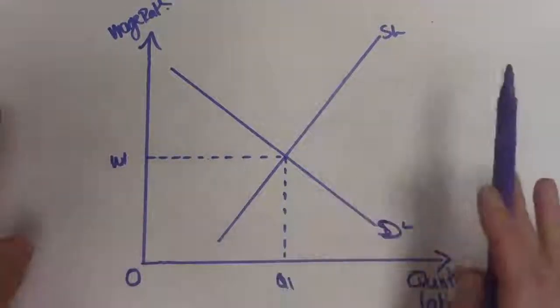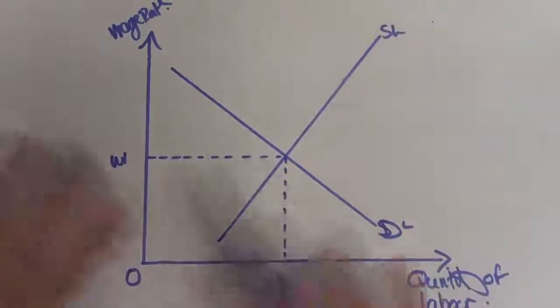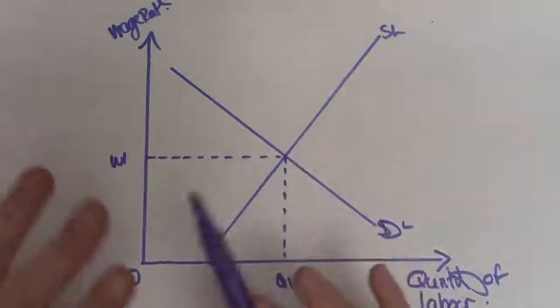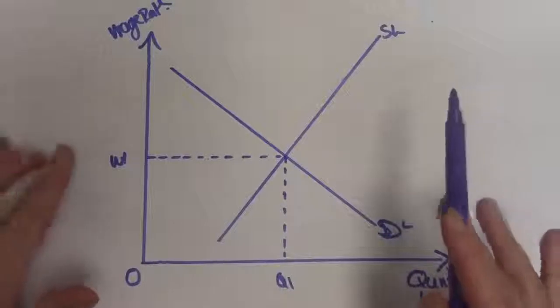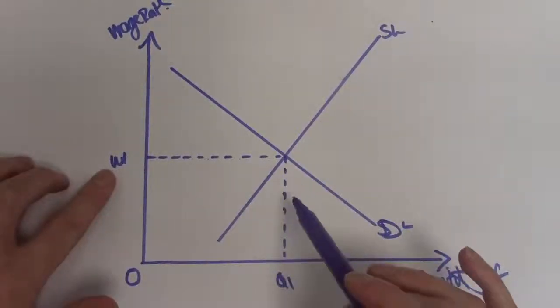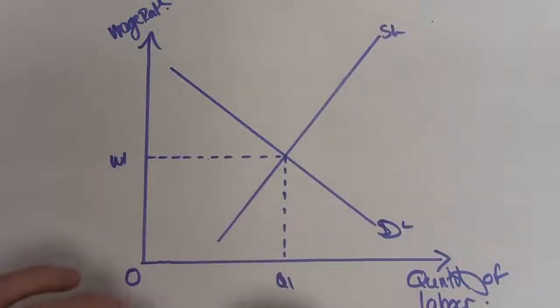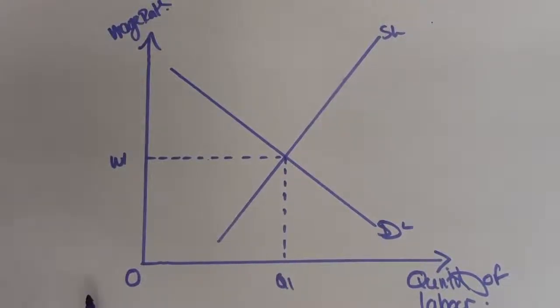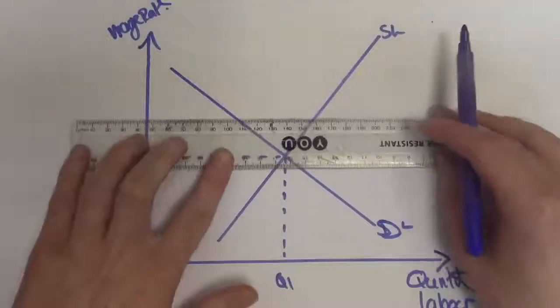In a market without any intervention from the trade union, we haven't even mentioned the trade union yet. The trade union hasn't done anything to increase this wage. This is the equilibrium wage rate determined by the market forces. Now, individual employees may not be happy with this wage rate. They may want this wage rate to increase. So let's imagine that the trade union was successful in their process of collective bargaining. They increase the wage.